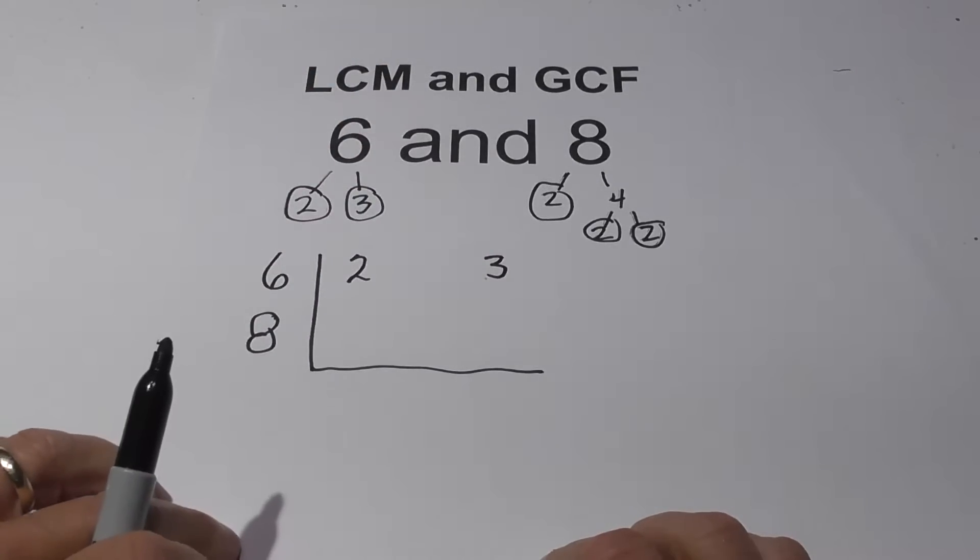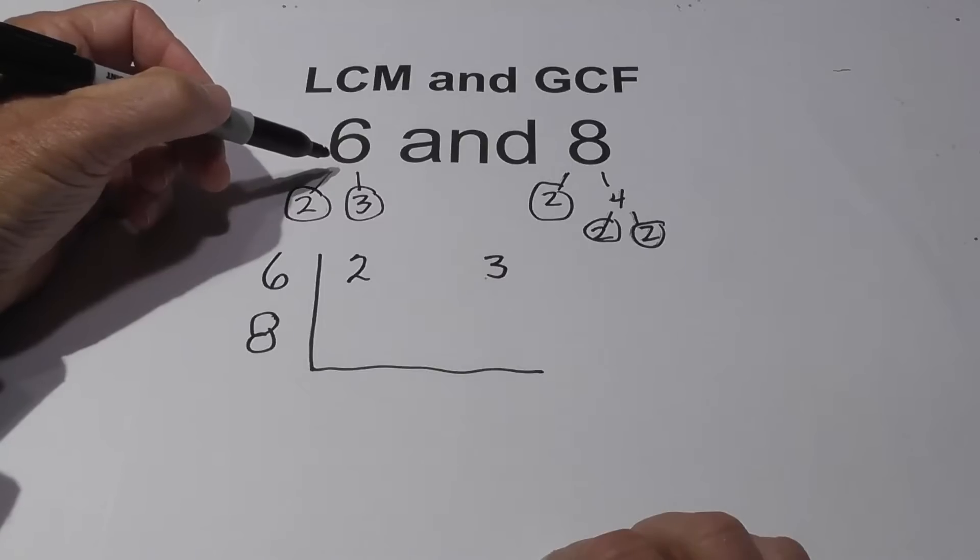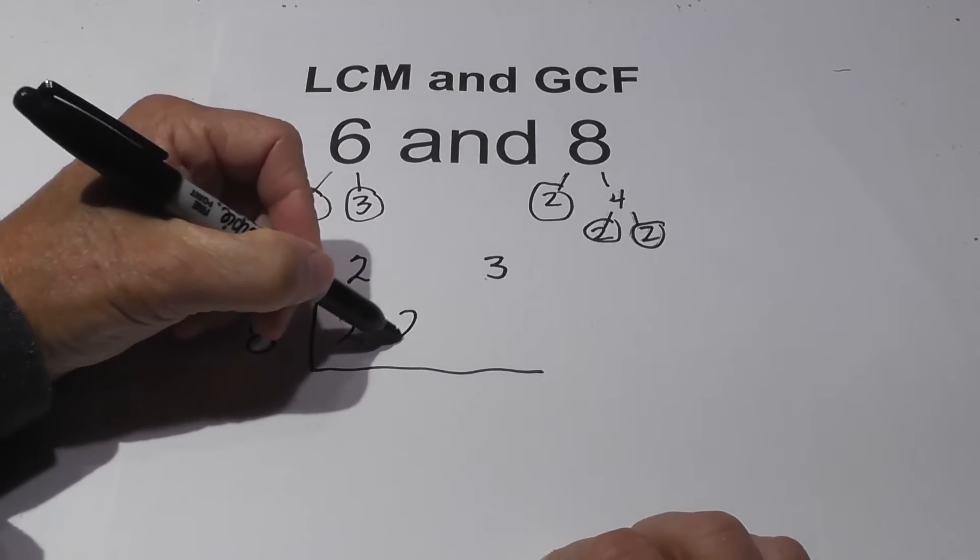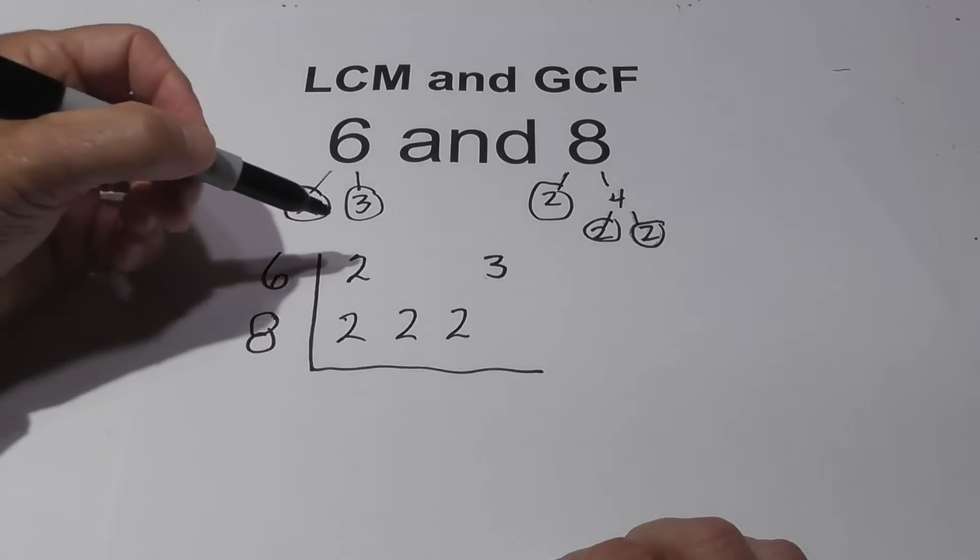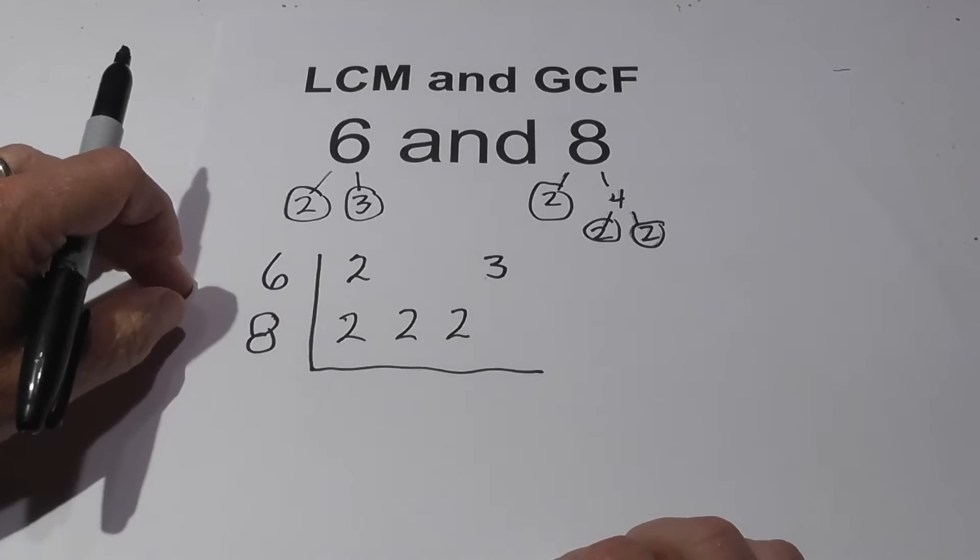I'm going to move the 3 out here, you'll see why. Next, what I do is write out the prime numbers for 8, and that's a 2 and a 2 and a 2. So now what I do is multiply basically these numbers together, except I do one thing.